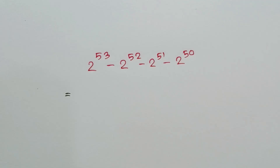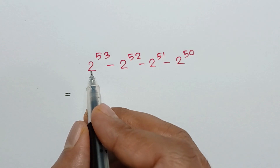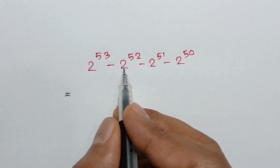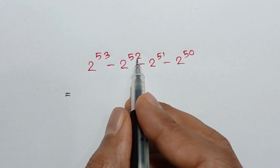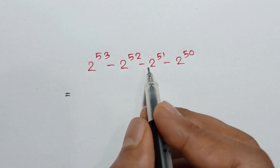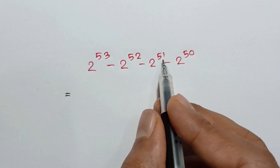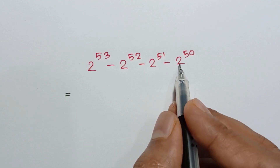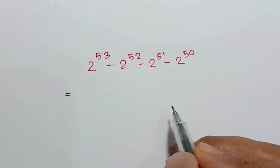Hi everyone. I am going to show how to simplify this expression: 2 to the power 53 minus 2 to the power 52 minus 2 to the power 51 minus 2 to the power 50.